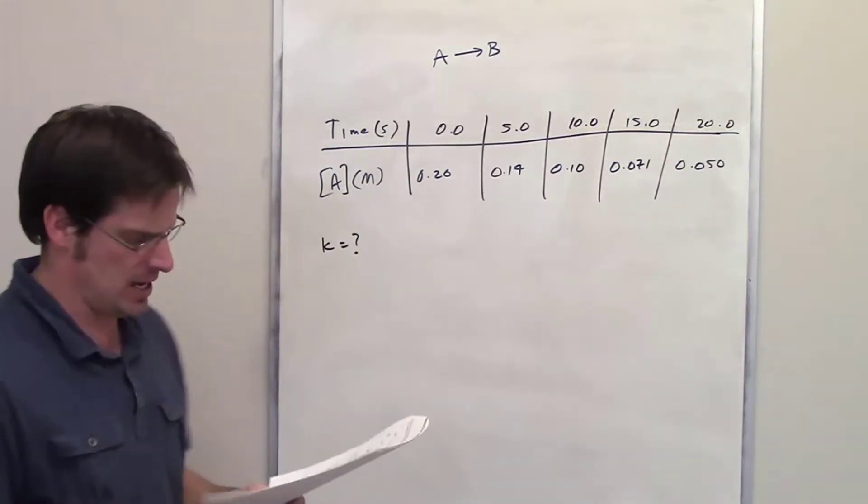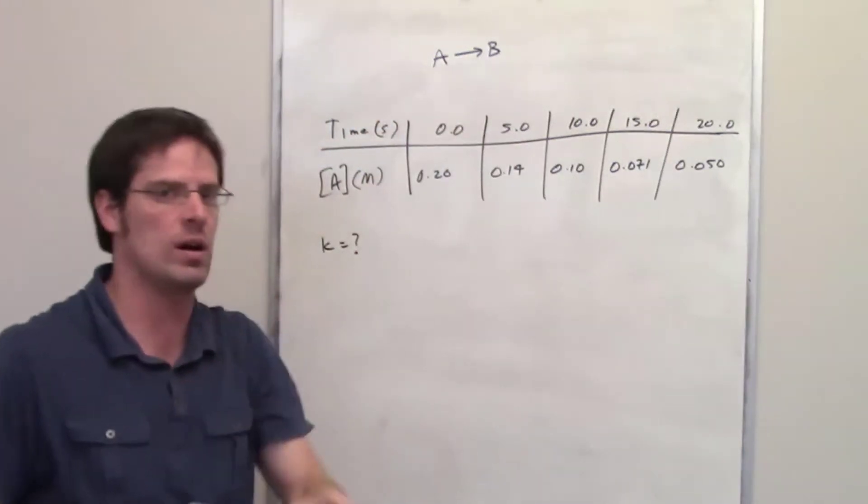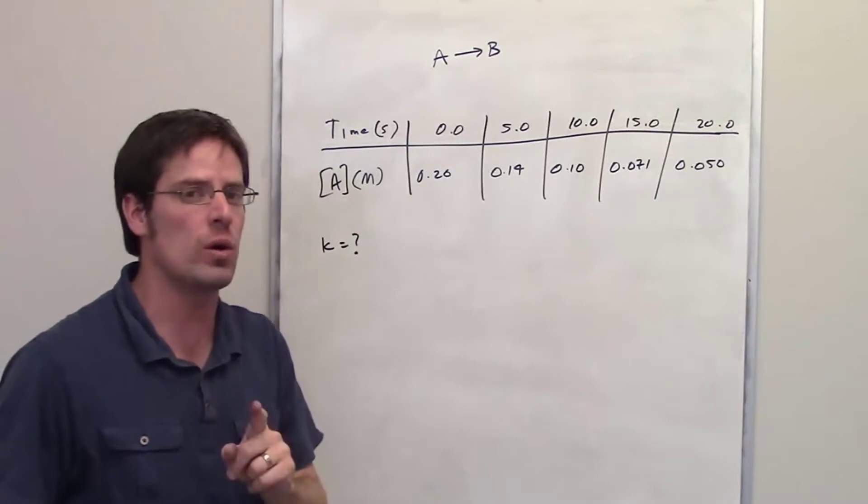For this example right here, it tells us a very simple reaction, A converting to B. And it tells us, furthermore, that this reaction is first order with respect to A.